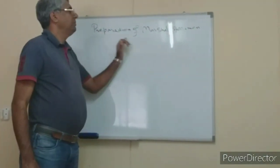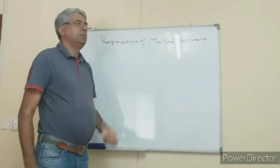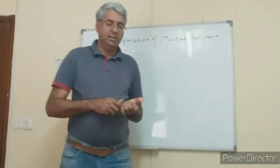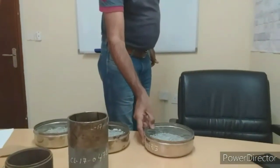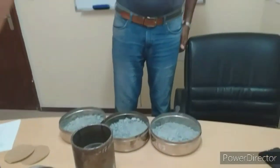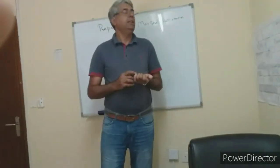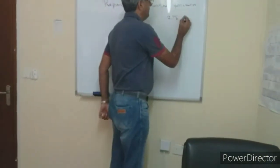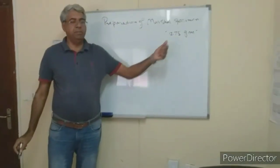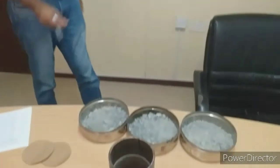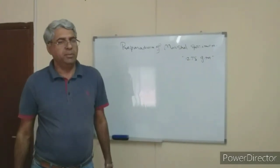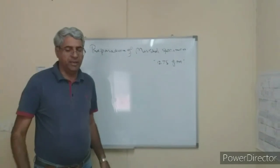We have to prepare the Marshall specimen as part of the mix design. I have a blend of aggregate with me — all three blends have the same weight. I have taken 1275 grams for each blend of aggregate. Some people use 1200 or 1250, but I have used 1275 grams for this demonstration.